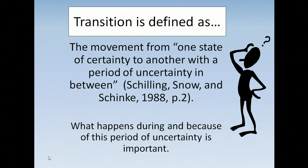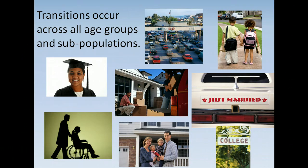Educational researchers have defined transition as the movement from one state of certainty to another with a period of uncertainty in between. What happens during and because of this period of uncertainty is what's important, especially for a child. Transitions can occur for anyone across all age groups and subpopulations — in education, career, and personal life. Our focus is on transitions in school, but it's important to understand that we are constantly transitioning throughout our lives.